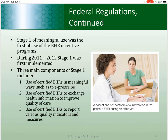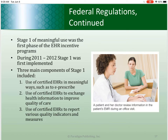Stage two expanded upon stage one criteria and encouraged the use of health IT for continuous quality improvement at the point of care. There were seven topic areas, including protecting electronic protected health information, e-prescribing, health information exchange, patient-specific education, medication reconciliation, patient electronic access, and public health reporting. Examples of meeting stage two criteria included generating and transmitting electronic prescriptions upon patient discharge, providing patients the ability to view, download, and transmit their health information within 36 hours of discharge, and sending a summary care record for patients transitioning to another institution.